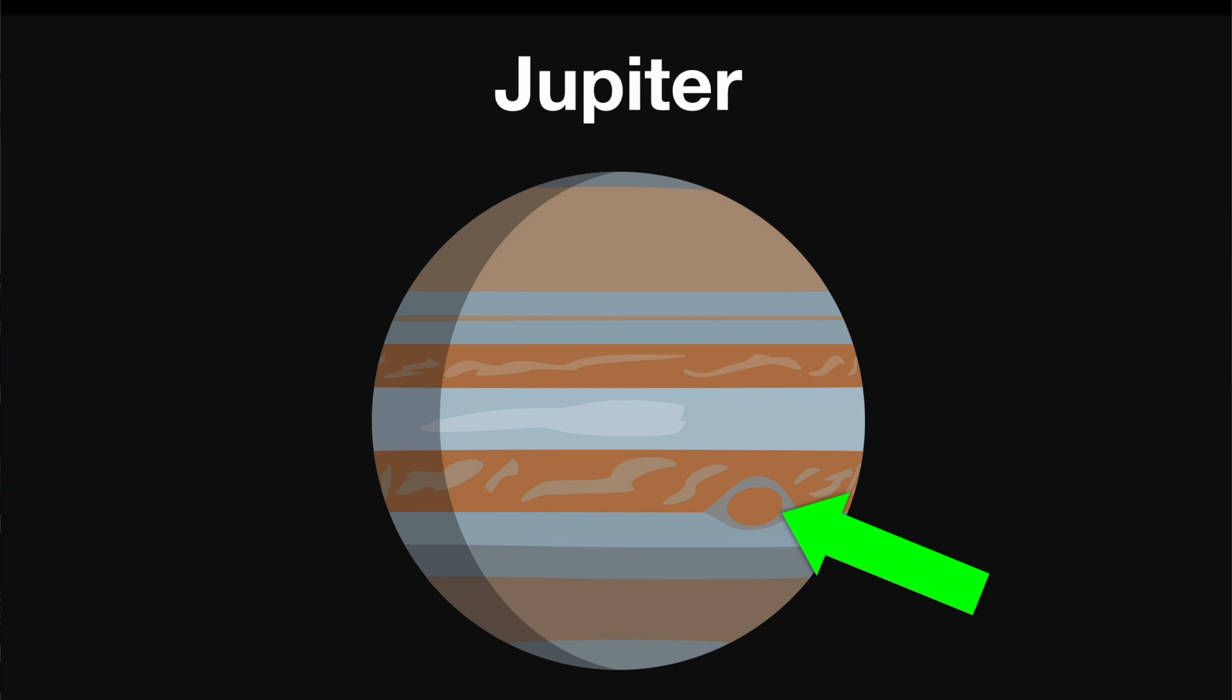This is an enormous storm which has been persistent for over many hundreds of years. This planet has 95 moons, one of which is the largest moon of all planets.